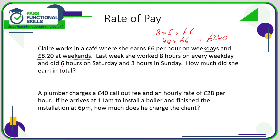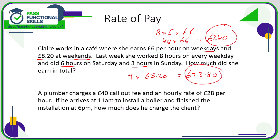At the weekend she did 6 hours plus 3 hours, so that's 9 hours at £8.20. I didn't use a calculator for the previous calculation because it was quite easy, but this one I would definitely use a calculator for. 9 times 8.2 equals £73.80. So all you need to do is add £73.80 and £240, and we get the grand total of £313.80.